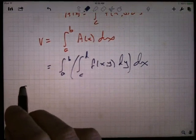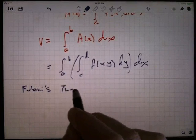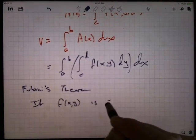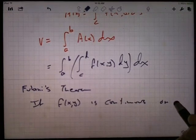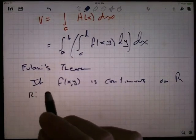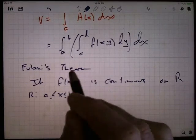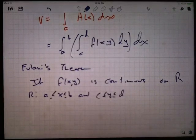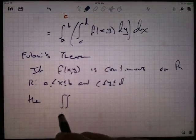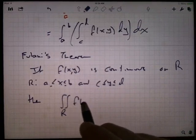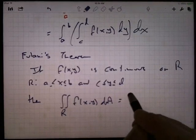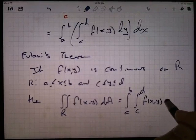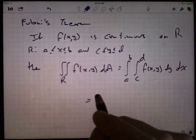Fubini's theorem says that if f of x, y is a continuous function, continuous on some rectangle r, where r is defined as x is between a and b, this is the picture we have drawn up above, and y is between c and d. So you're continuous on a rectangle. Then, the double integral over the region of f of x, y, dA is the same as the iterated integral, the integral from a to b, the integral from c to d of f of x, y, dy, dx.